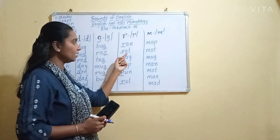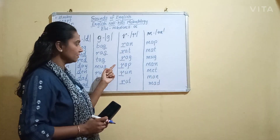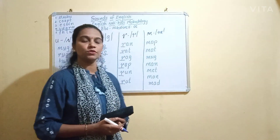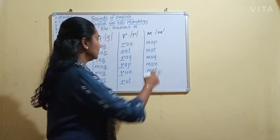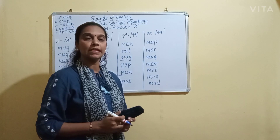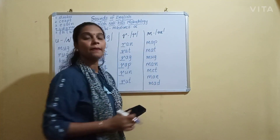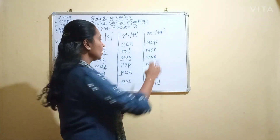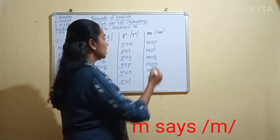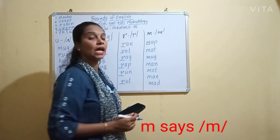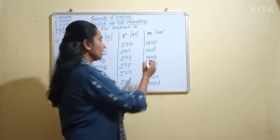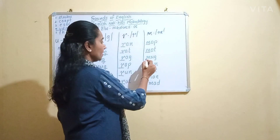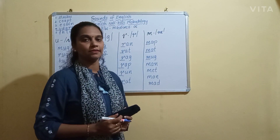Examples for R says R: rat, ran, and related words. Let us read the examples once again — R says R.